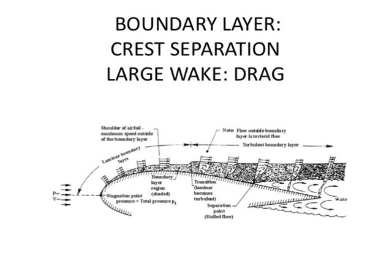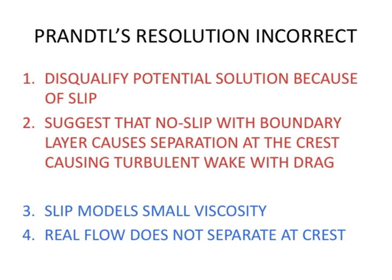A no-slip boundary condition forms a boundary layer, and Prandtl suggested that a boundary layer may cause flow separation at the crest of the flow, giving rise to a turbulent wake with low pressure, causing drag. Prandtl's resolution is thus based on: 1. disqualify the potential solution because of slip; 2. suggest that no-slip with boundary layer causes separation at the crest, causing a turbulent wake with drag.